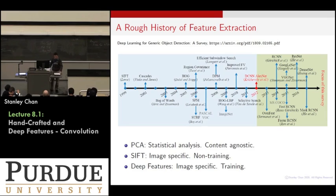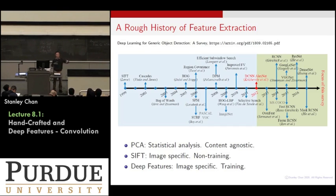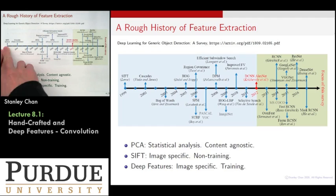This is a slide from an article online showing the history of different types of feature extraction methods. This timeline starts from 1999, but that's already just a rough estimate, because feature extraction, if you trace back, can go all the way to the 80s or 70s. There are already methods out there. If you treat principal component analysis as feature extraction, you can trace it back 200 years — by the time of Gauss. So this is a very, very old method.